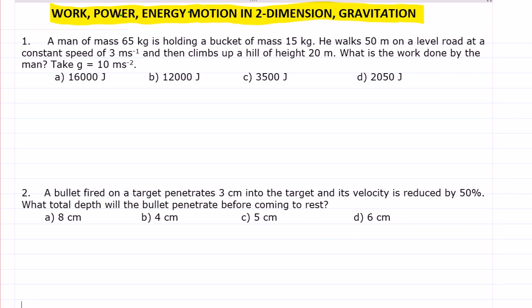The question is: a man of mass 65 kg is holding a bucket of mass 15 kg. He walks 50 meters on a level road at a constant speed of